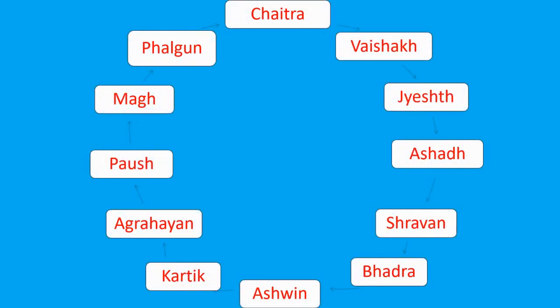1st: Chaitra. 2nd: Vaishak. 3rd: Jyeshtha. 4th: Ashad. 5th: Shravan. 6th: Bhadra.